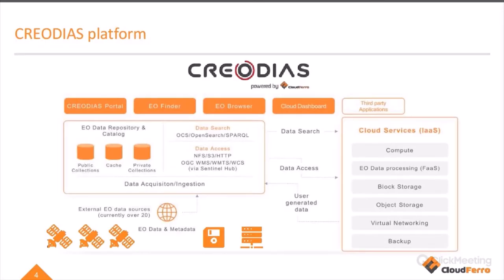Here is a brief introduction to how our Creodias platform is constructed. We have a platform with tools for earth observation. Creodias was designed to handle big amounts of earth observation data — we currently hold 21 petabytes of earth observation data from the Copernicus program. This data is very smoothly integrated with our cloud repository, so users can use this EO data in the same way as in-situ data, aligned with the paradigm of bringing processing to the data.